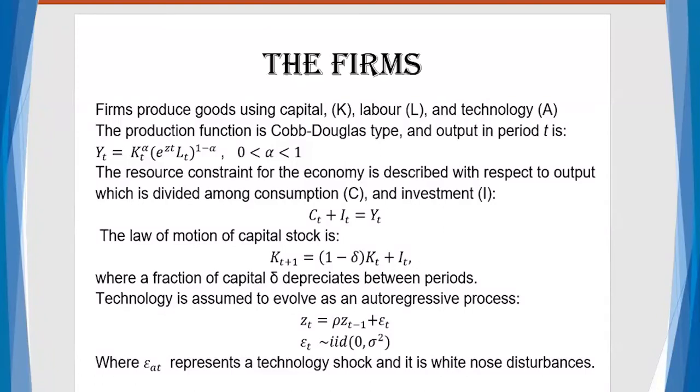So we have seen the optimization procedure for household, and now we want to look at the case of the firms. Remember, we are dealing with RBC, and in the case of RBC, we are just dealing with two agents only. The firms produce goods using capital K, labor L, and technology A.